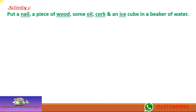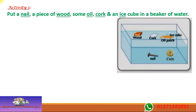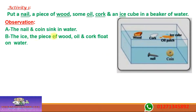If I take a nail, wood, oil, cork, ice, and coins, and put them in a beaker of water — what happens? The nail and coin will sink in the water. The ice, oil, wood, and cork will float on top. Why do some sink and some float?